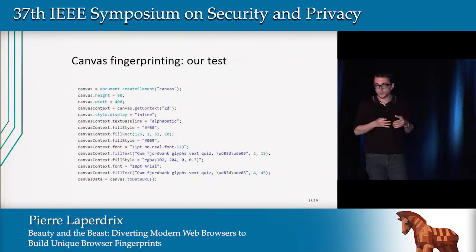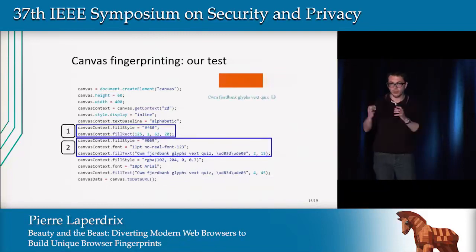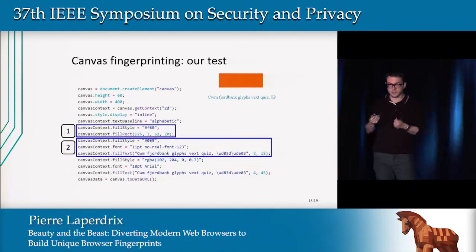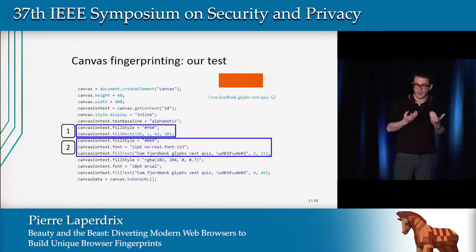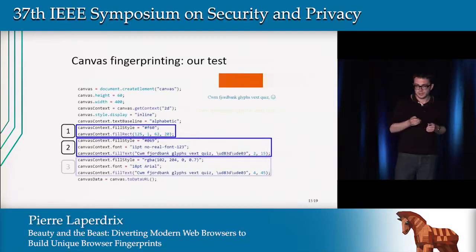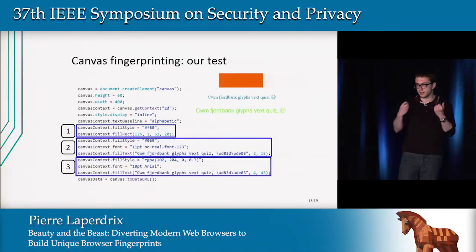In our test, we create the canvas element, specify the dimensions, and ask the browser to draw an orange rectangle at a specific location. We also ask it to render a string with all the letters of the alphabet plus a specific Unicode character at the end, requesting a font that does not exist. The browser then uses a fallback font — used when a glyph is missing or the font is not present on the operating system — which will differ depending on your device. Finally, we ask the browser to draw the same string slightly bigger in a different color using the Arial font, which is common on today's operating systems.